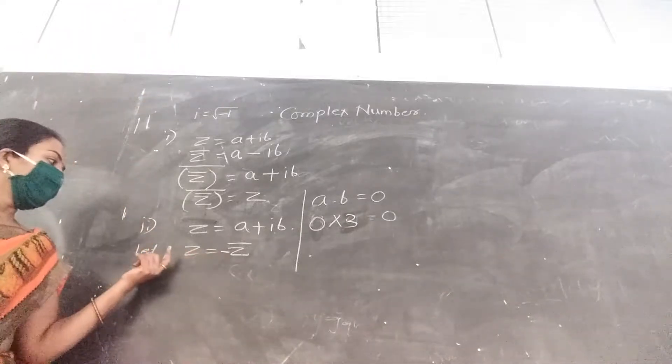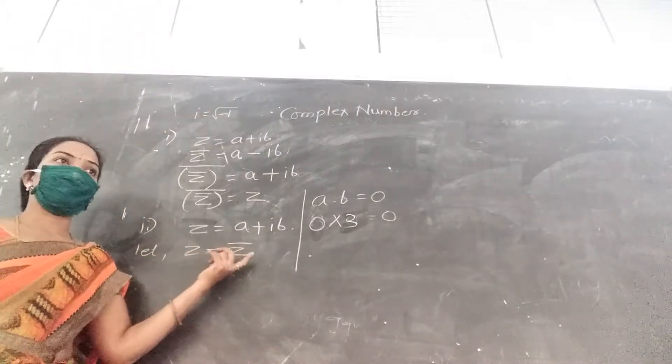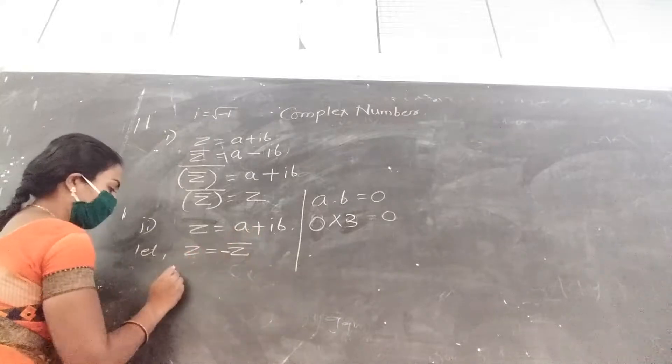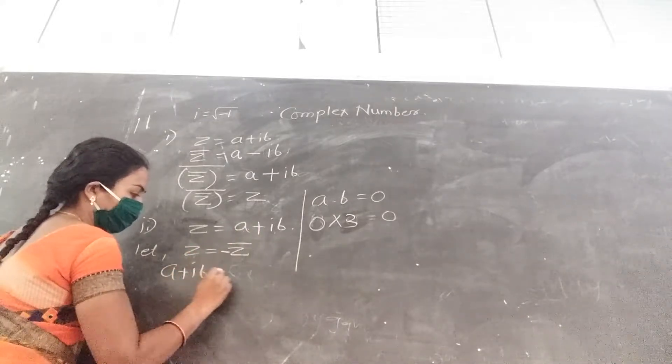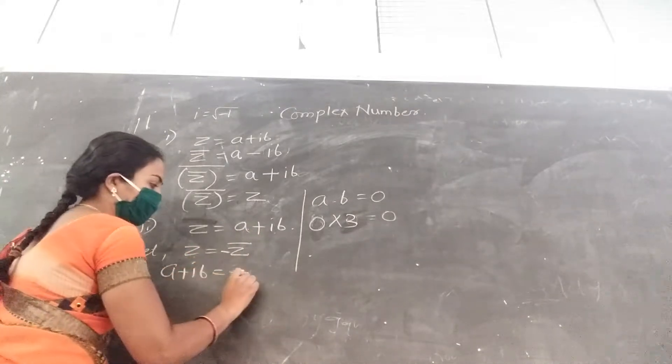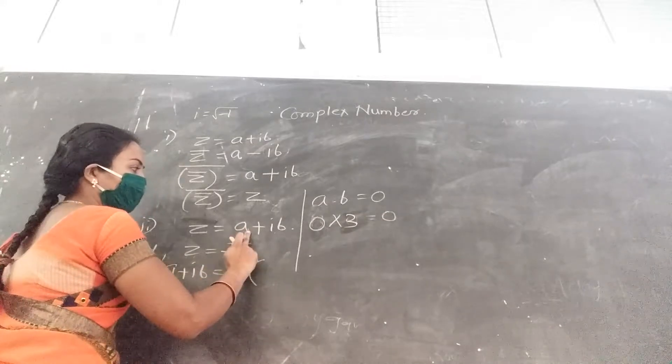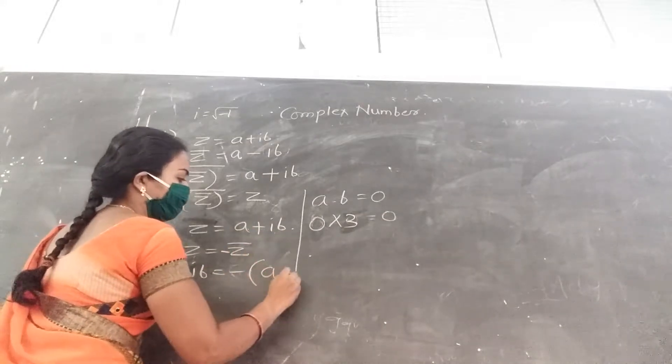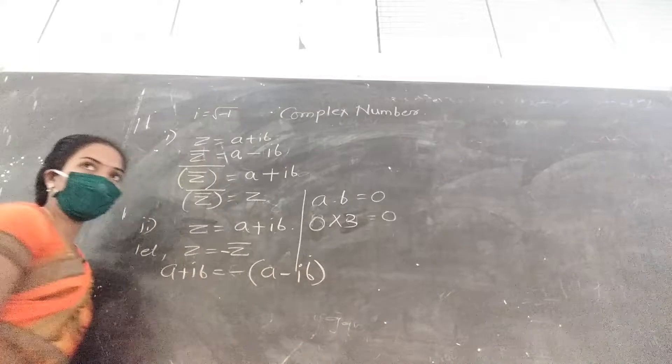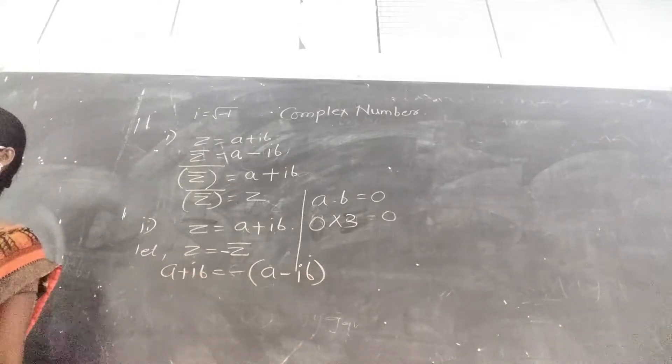We consider the next one. Let z equal to minus z bar. Z means a plus ib, which is equal to minus, minus z bar means a minus ib. Z bar means a minus ib.